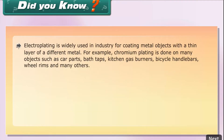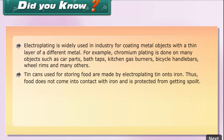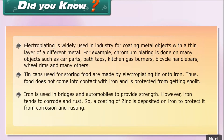Electroplating is widely used in industry for coating metal objects with a thin layer of a different metal. For example, chromium plating is done on many objects such as car parts, bath taps, kitchen gas burners, bicycle handlebars, wheel rims, and many others. Tin cans used for storing food are made by electroplating tin onto iron, so food does not come into contact with iron and is protected from getting spoiled.